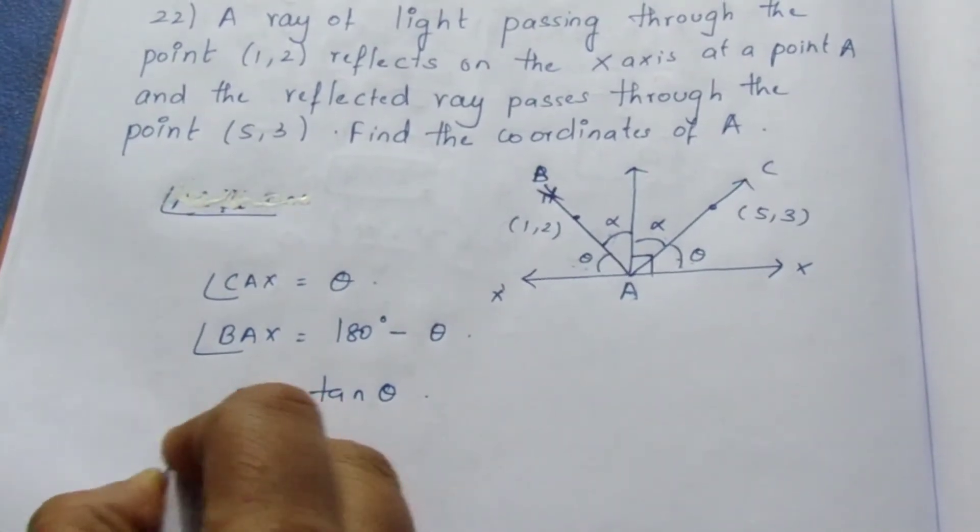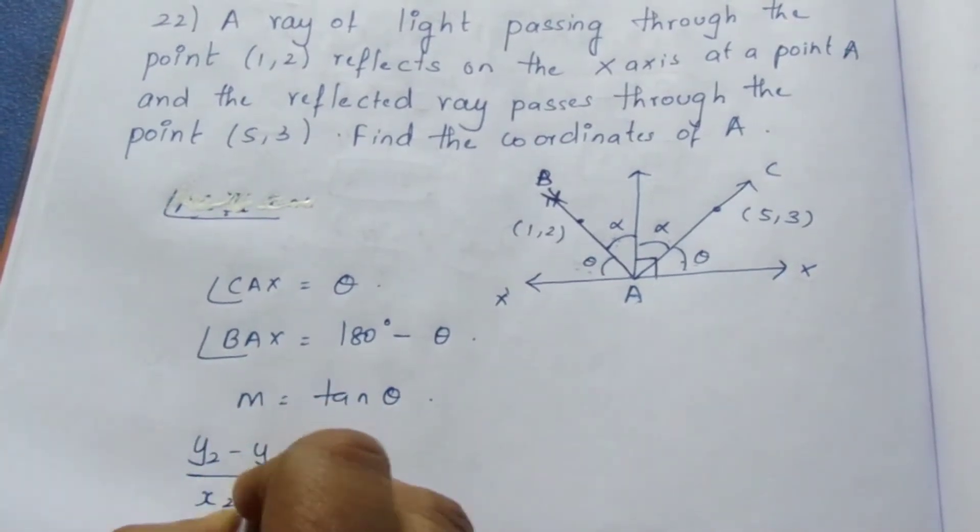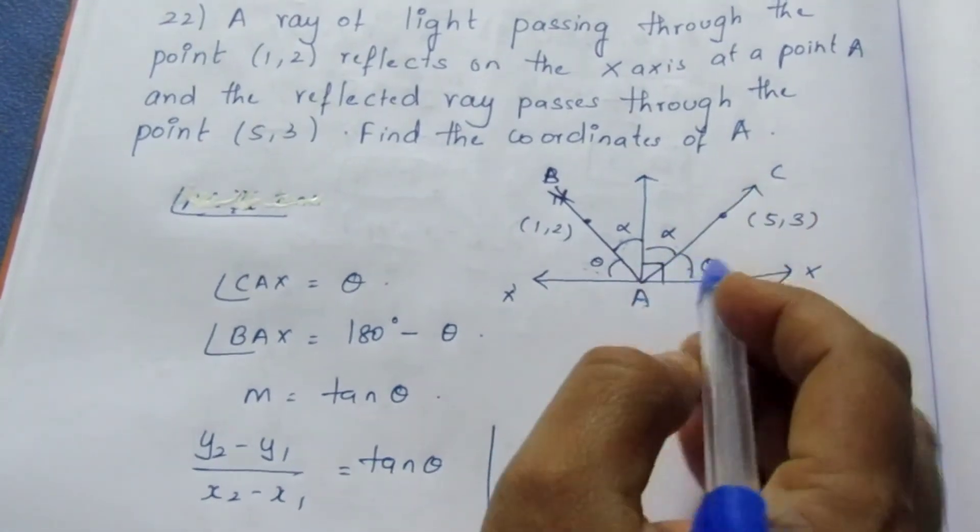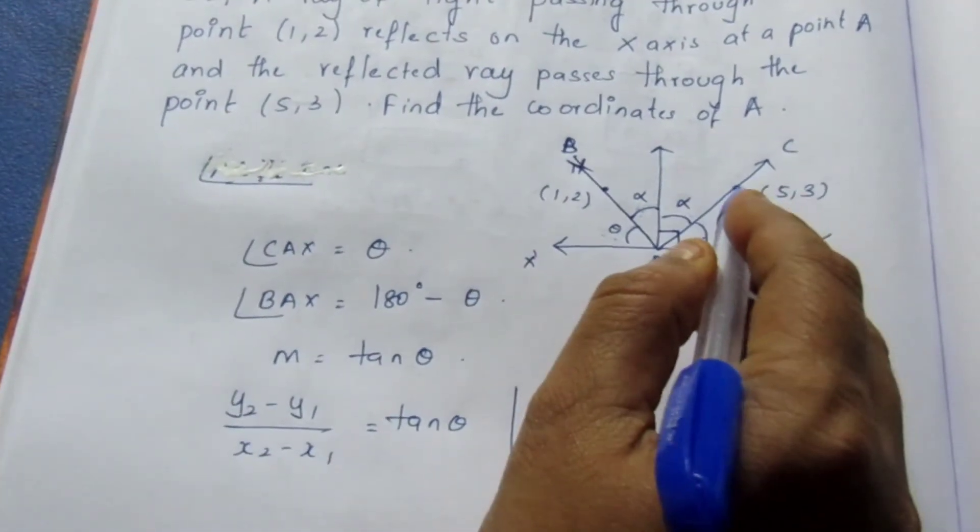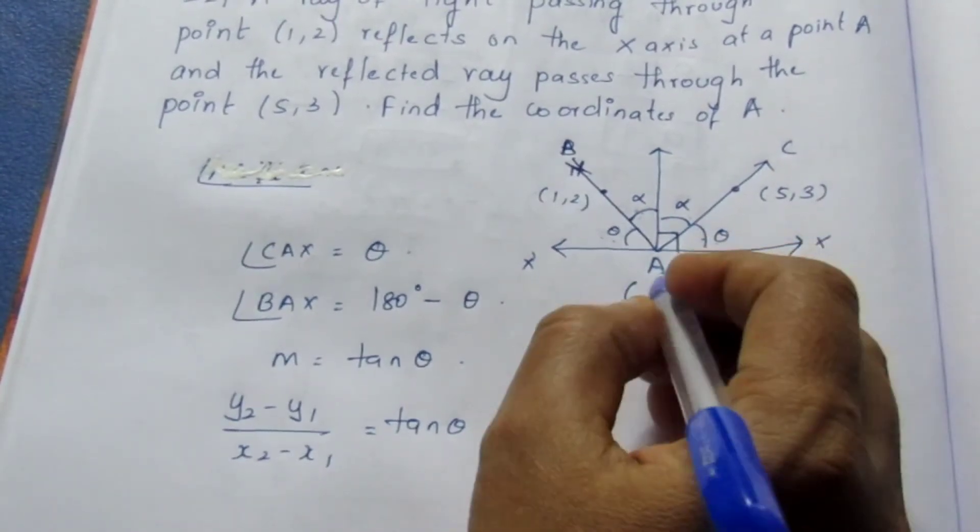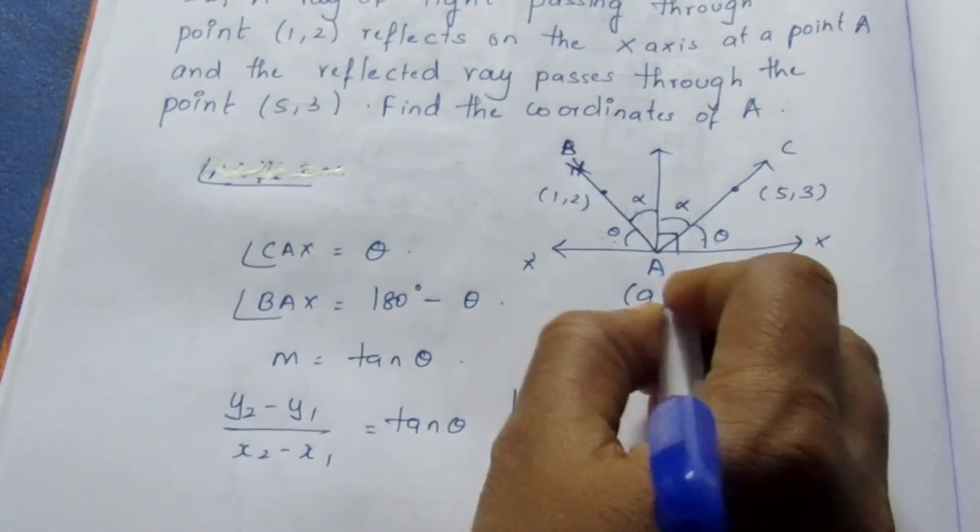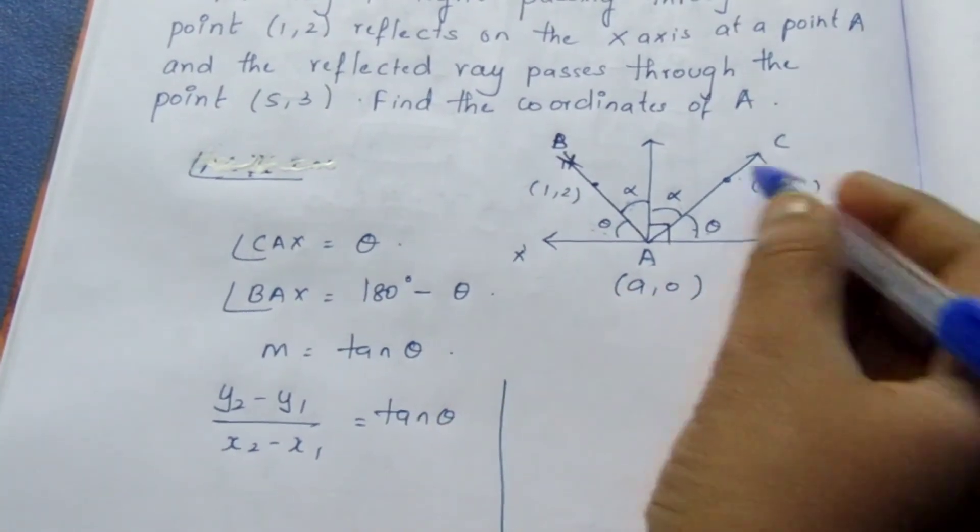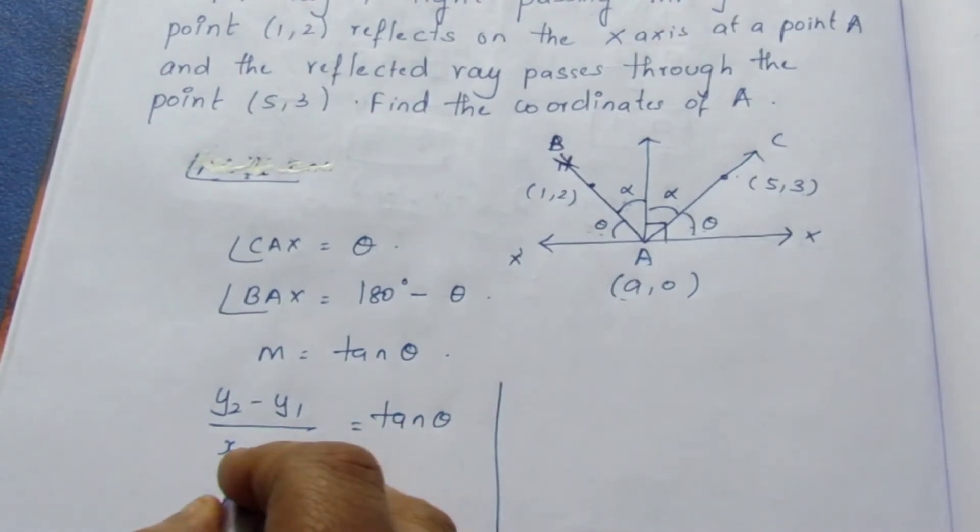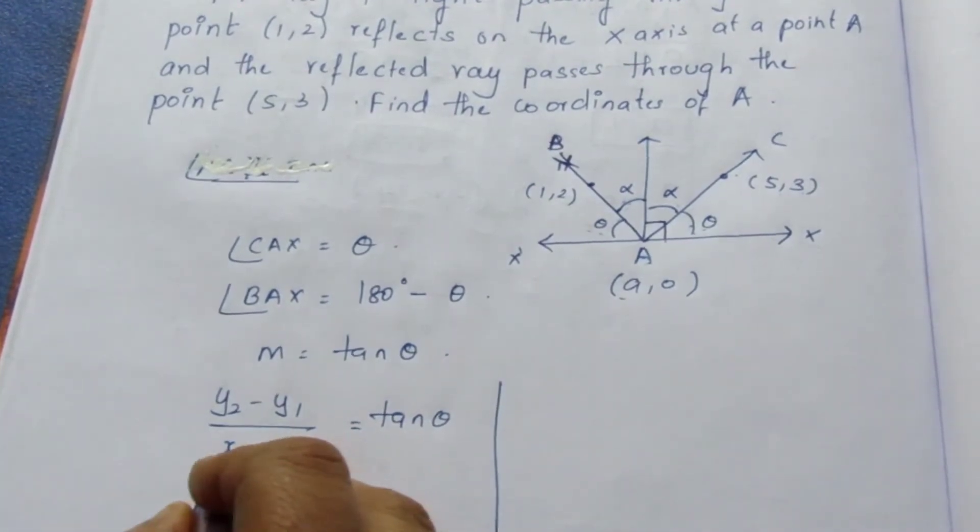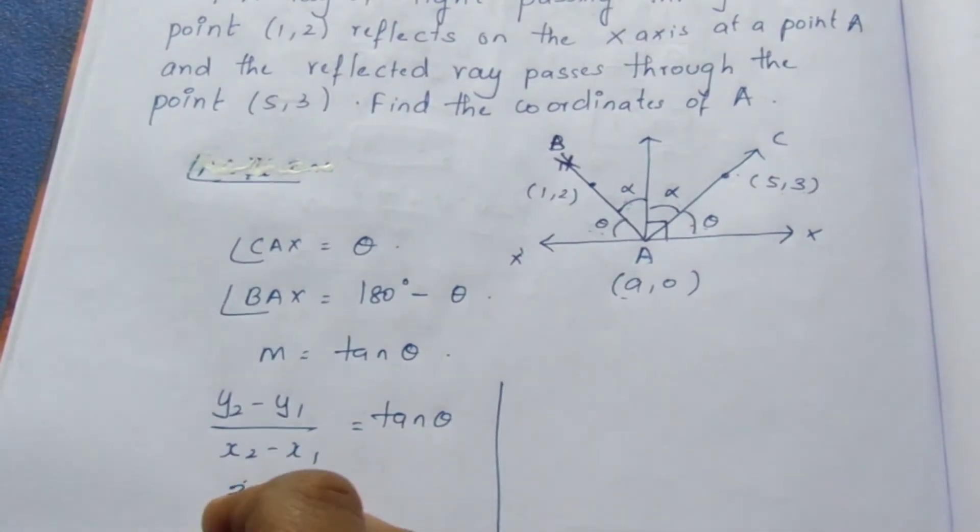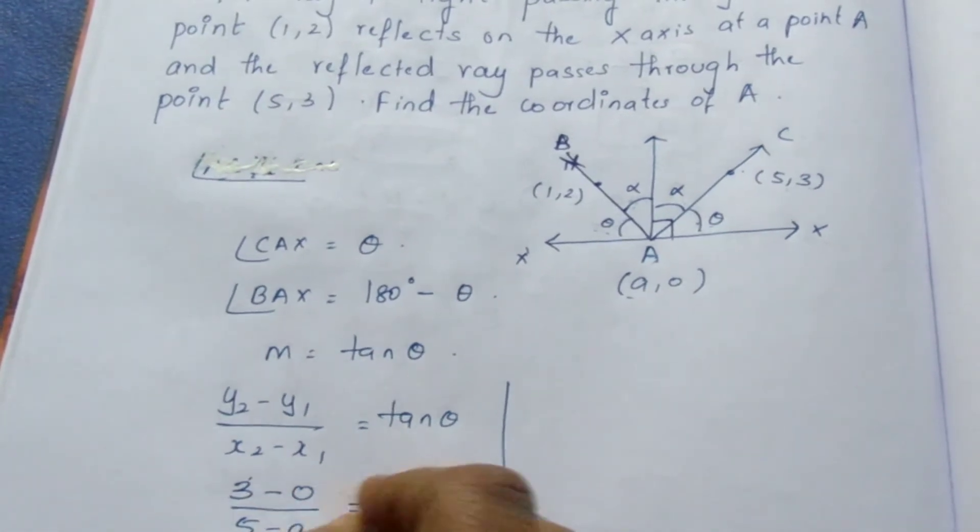Slope formula is y₂ minus y₁ by x₂ minus x₁ equals tan theta for CAX. As it passes through the point (5,3), it is on the x-axis, so I am going to take it to be (A,0). So this point x₁, y₁, I am taking this to be x₂, y₂. It becomes 3 minus 0 by 5 minus A equals tan theta.